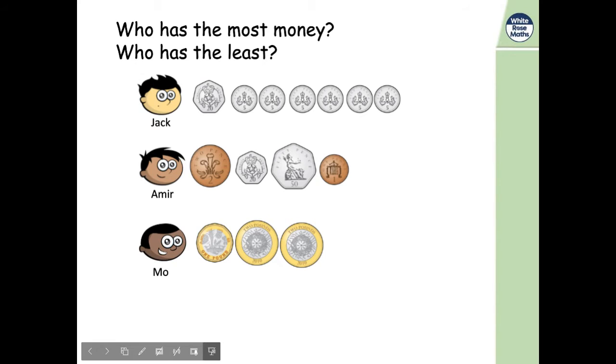We've got Jack, Amar and Moe here. And they've all got some different amounts of money. Who has the most and who has the least? Pause it, look at the coins, and then come back for the answers.